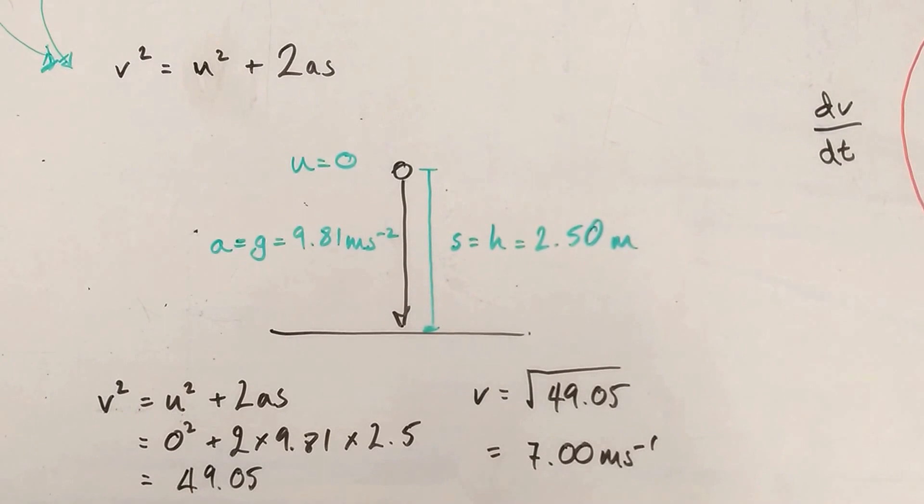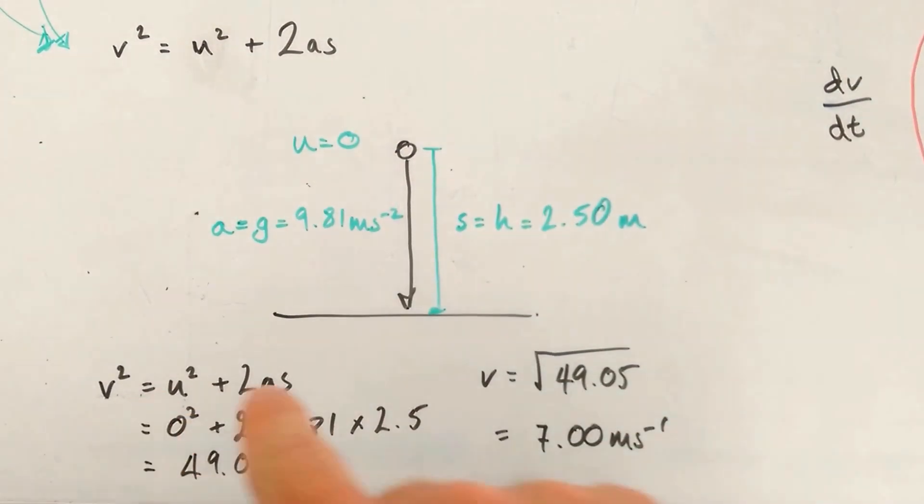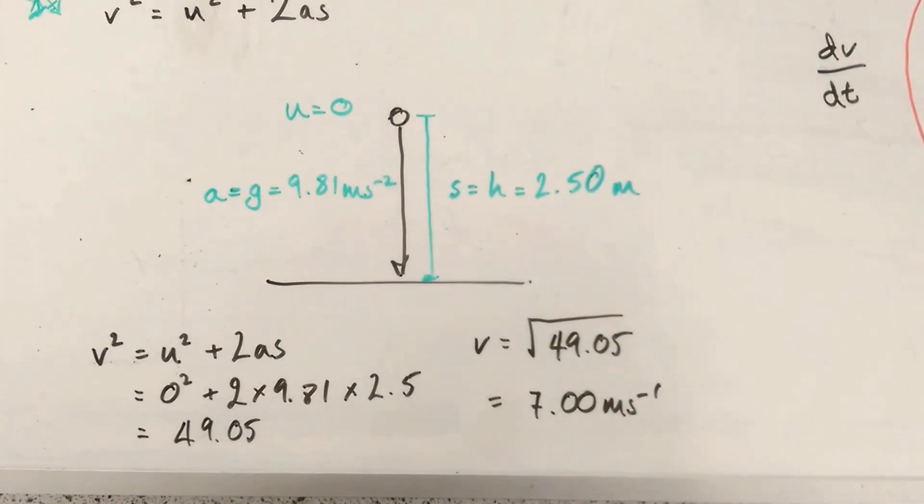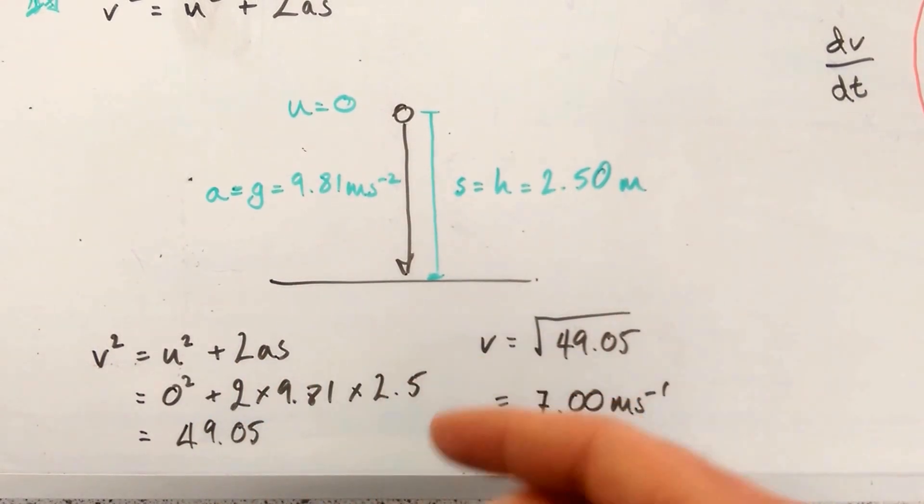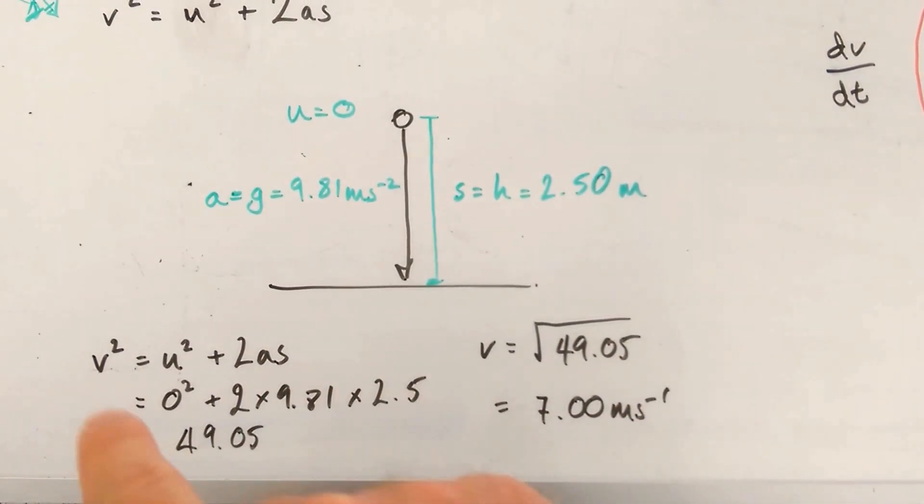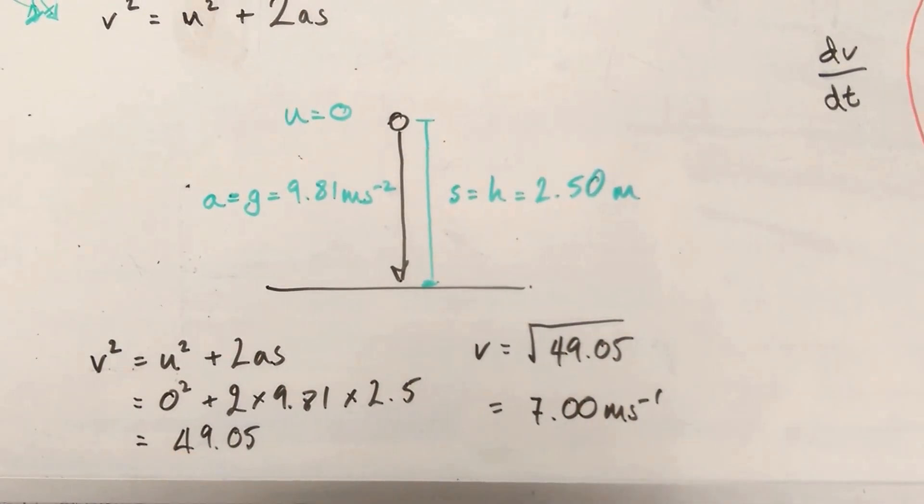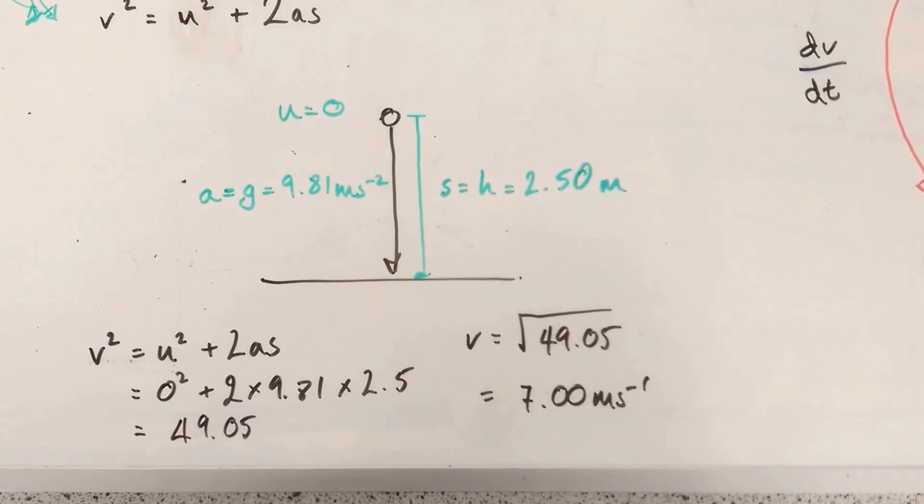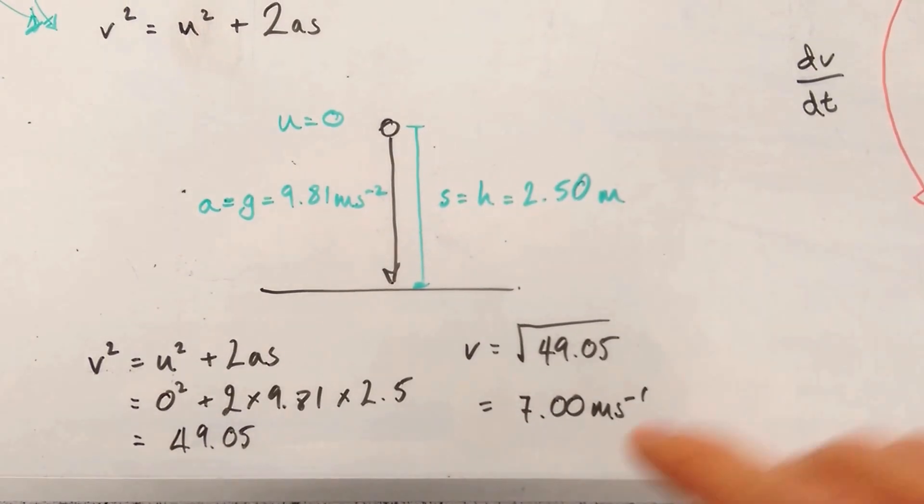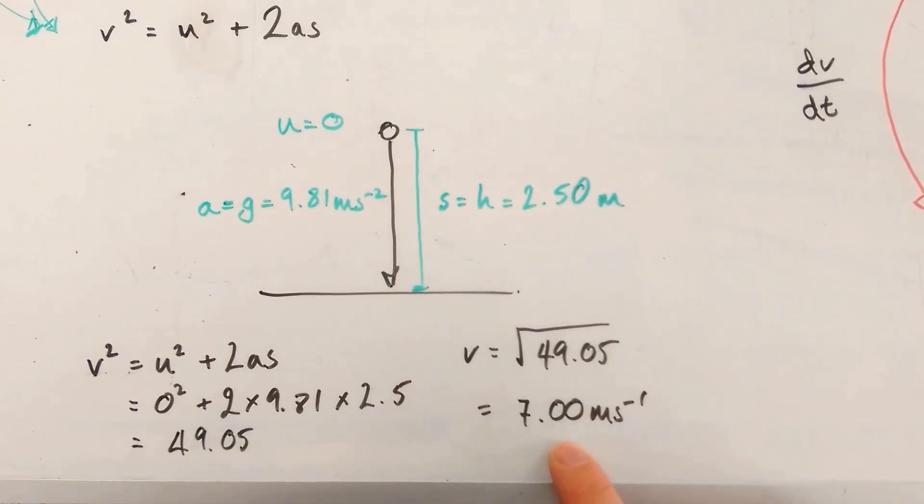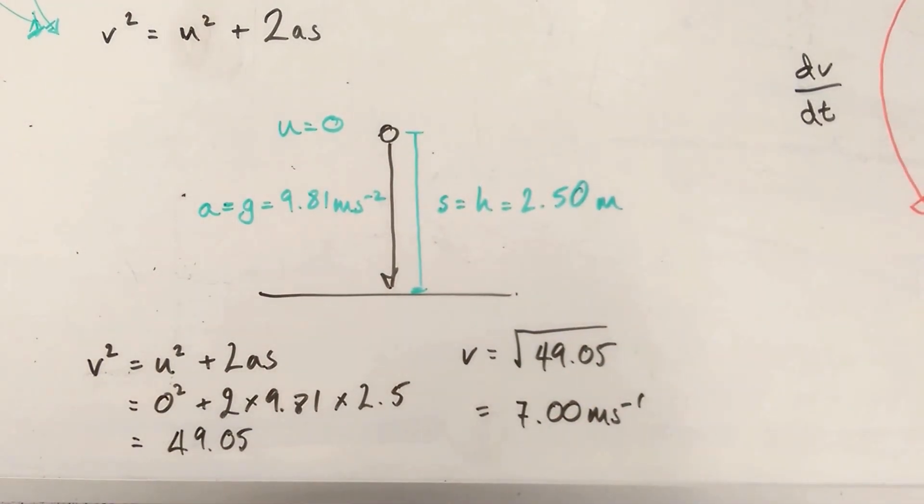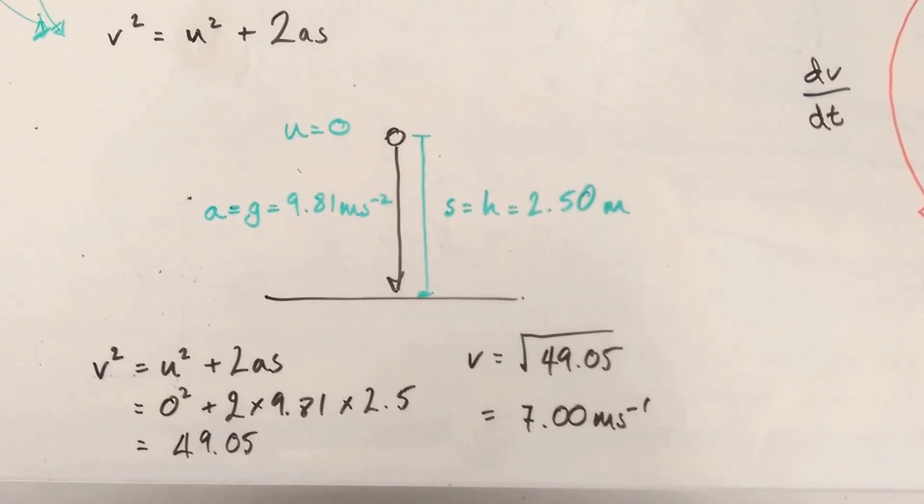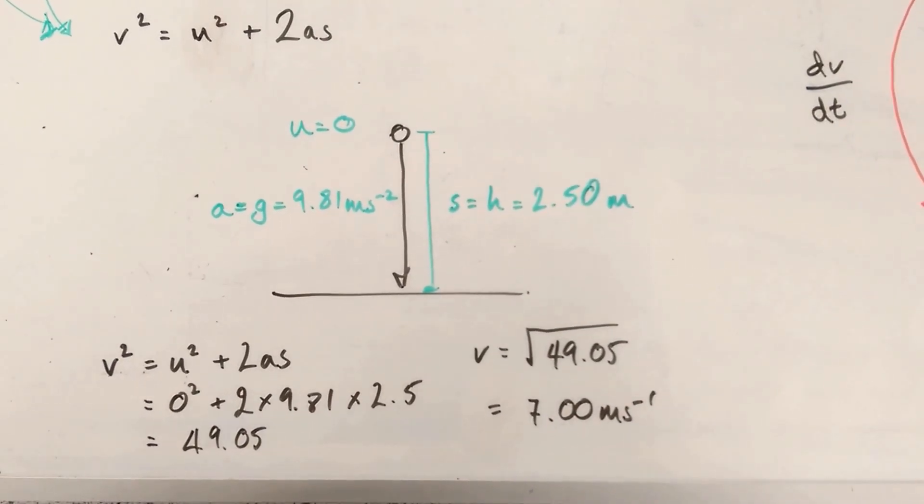We're going to work out the final velocity. So we know everything in this equation apart from v. So here we just input the numbers. Calculate, that's v squared, 49.05. So v is the root of 49.05, which is 7 meters seconds to minus 1. And just to say one thing about significant figures here, as our data has been all quoted in 3 sig figs, we should give our answer in 3 sig figs as well.